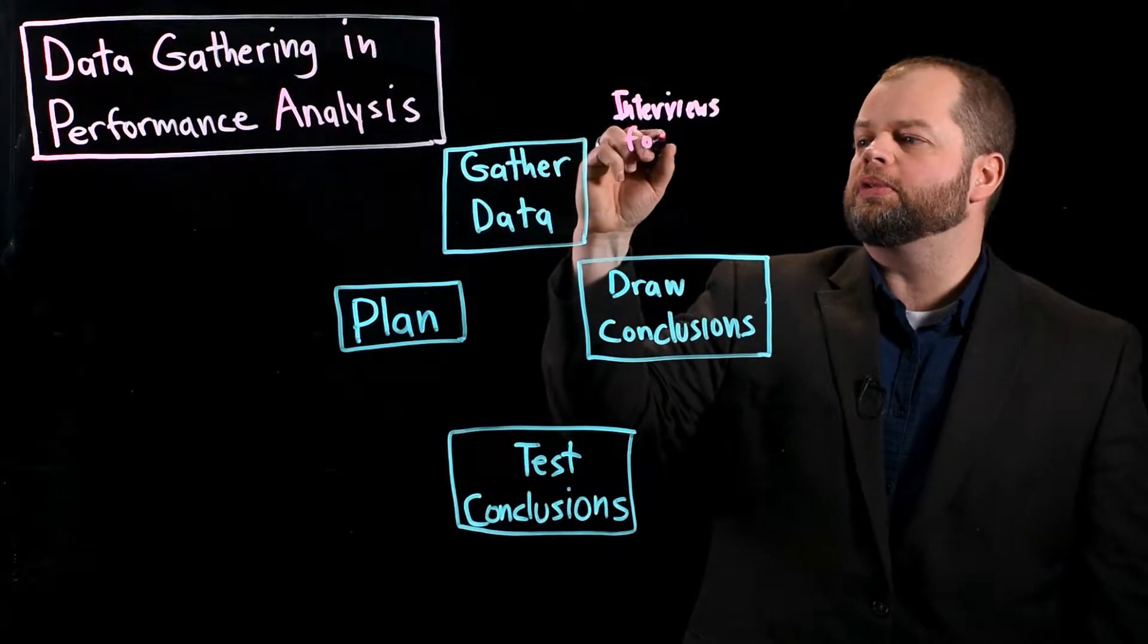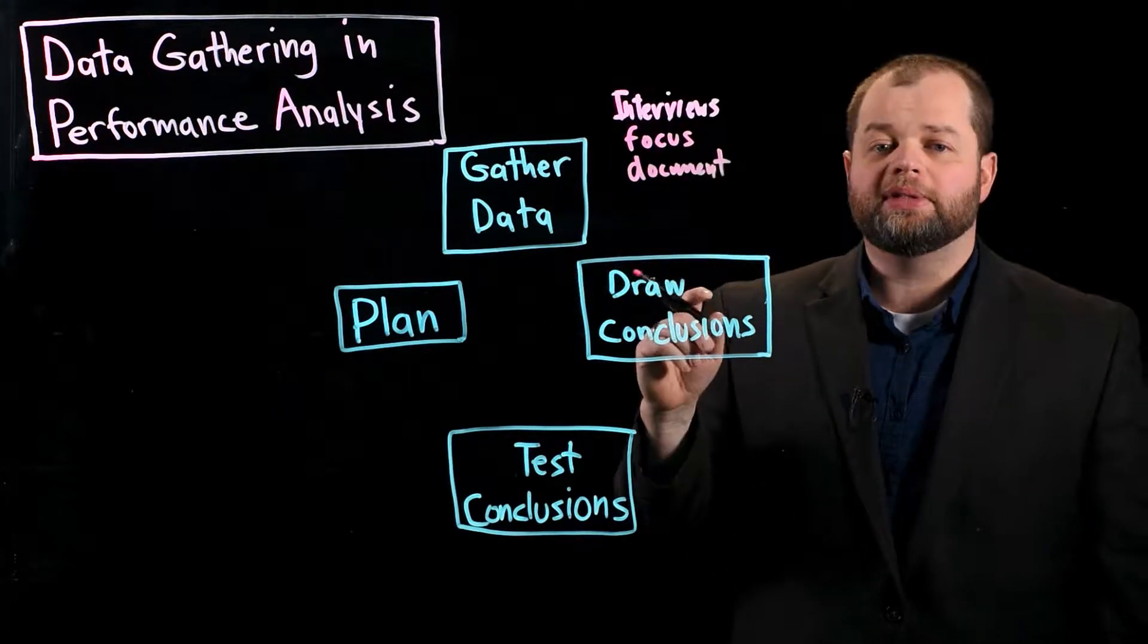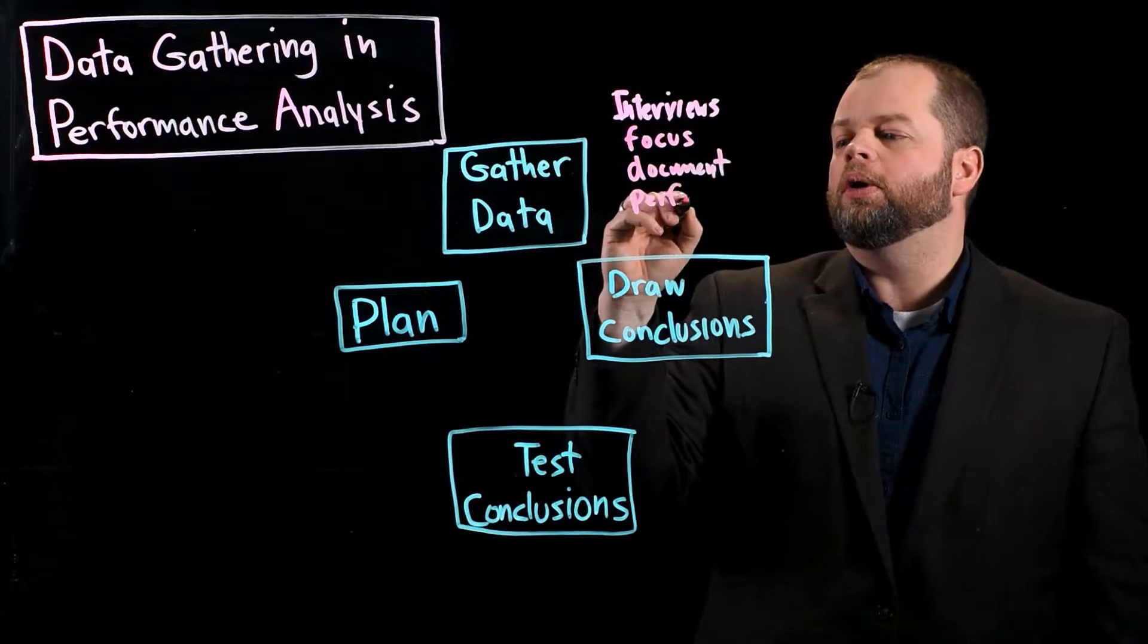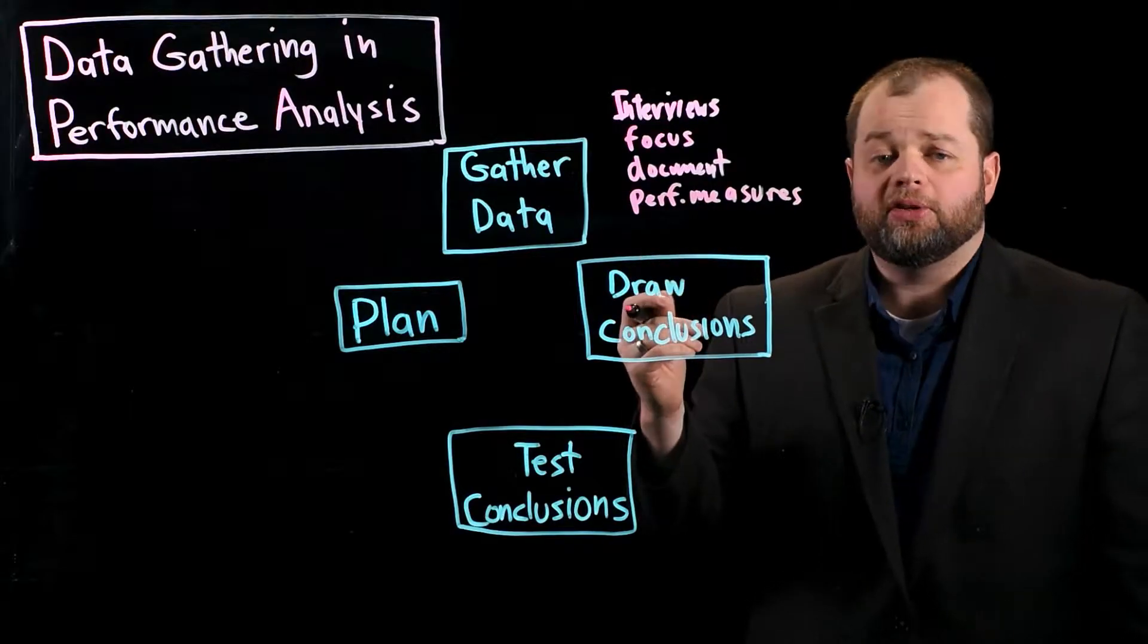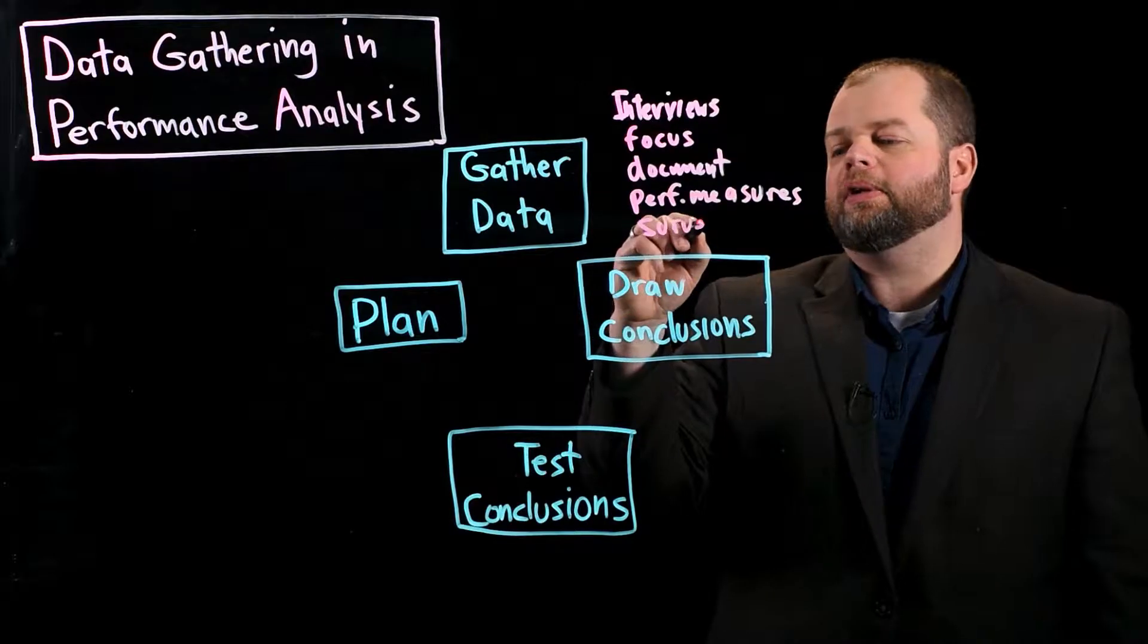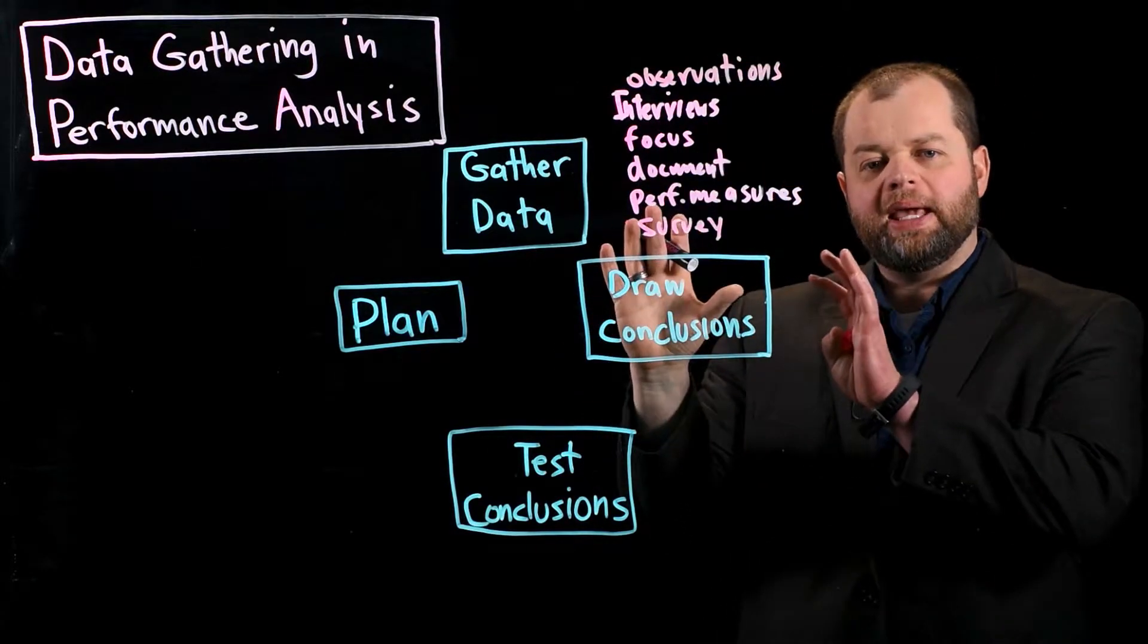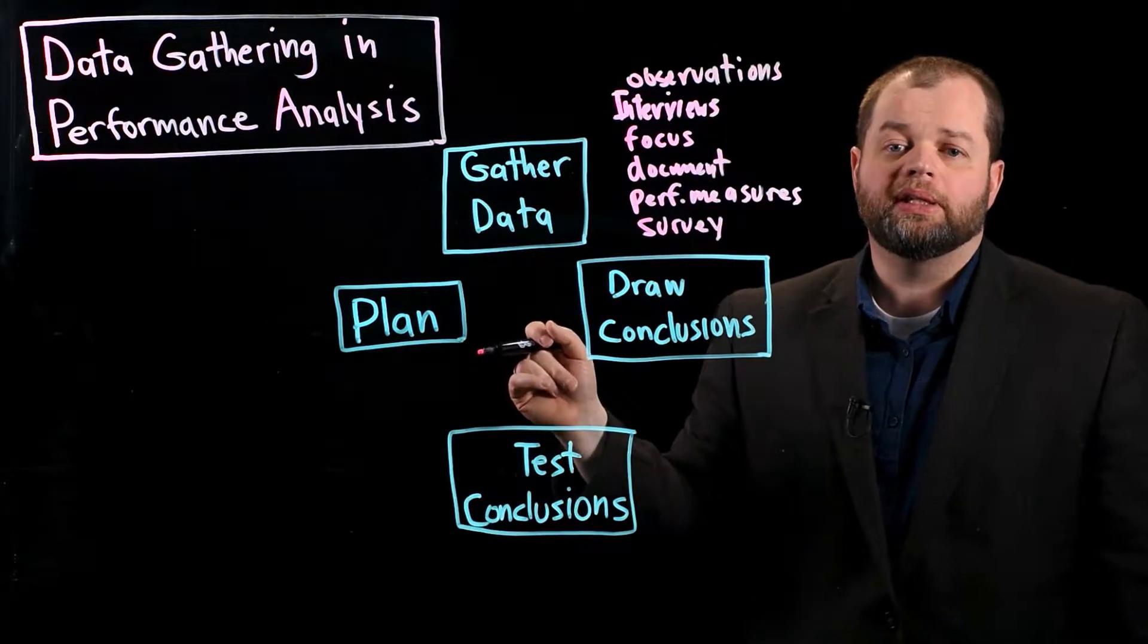So interviews. You might do some focus groups with some of those groups. Documents. That's really important. This will help you understand what the organization is about, some of their strategic plans perhaps. Also, performance measures. You really need to know what they're currently using for performance measures and how they track good performance. And finally, you can do some surveys. There are a lot of others. Observations is another one. Lots of ways to really get a sense for what's going on. And it's kind of tricky. You have to pick the type of data gathering that matches the problem or issue you're dealing with.